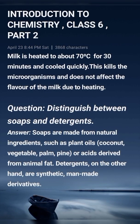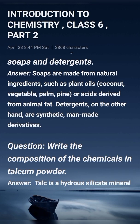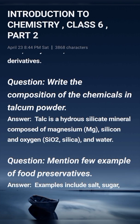Next question: distinguish between soap and detergent. Soaps are made from natural ingredients such as plant oils — coconut, vegetable, palm — or acids derived from animal fat. Detergents, on the other hand, are synthetic, man-made derivatives.